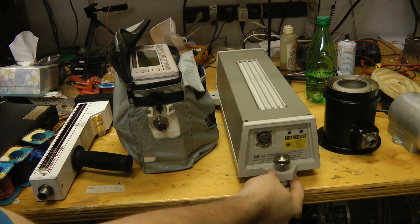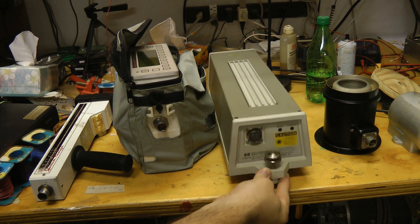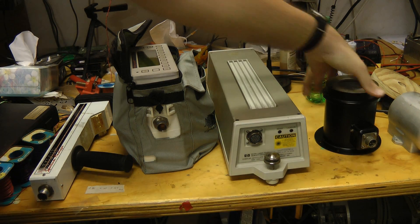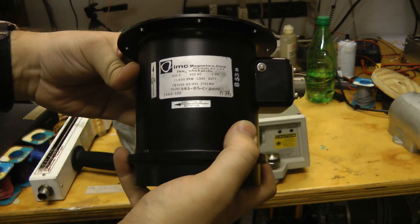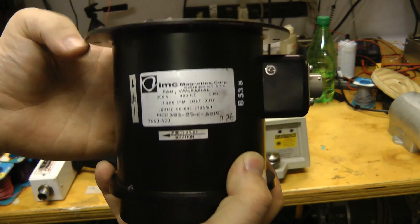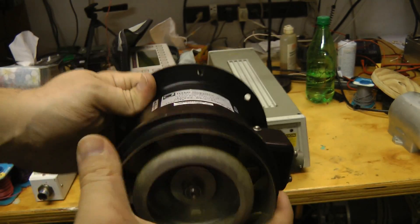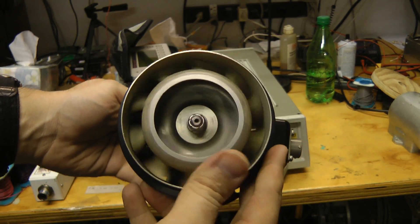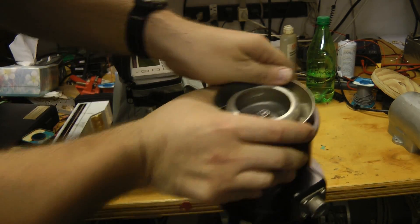Also got this Hewlett Packard 5518A laser head, as well as some sort of aircraft fan. It's an IMC Magnetics vane axial fan, 200 volts, 400 Hertz, 11,400 RPMs. This is bound to be really powerful. I think we'll play around with that in this video. I'll save the other stuff for other videos.